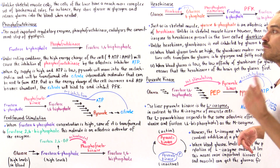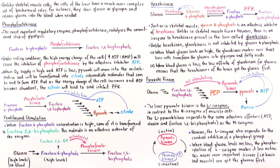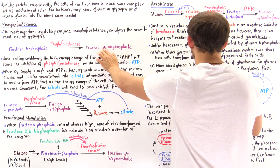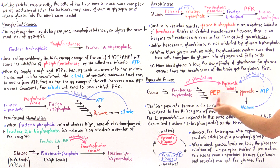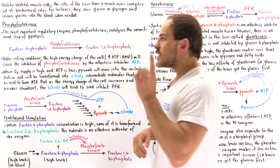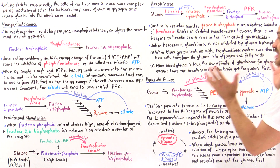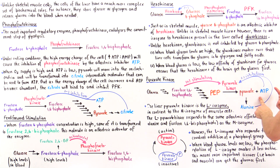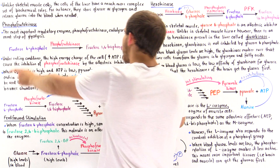Now let's move on to pyruvate kinase. Pyruvate kinase is responsible for catalyzing the final step of glycolysis — the transformation of phosphoenolpyruvate into pyruvate and ATP. Glucose is eventually transformed into fructose-1,6-bisphosphate, then into phosphoenolpyruvate, and pyruvate kinase converts this into pyruvate and ATP. If we have high concentrations of ATP, the ATP creates a negative feedback loop that binds onto pyruvate kinase and inhibits its activity, in the same way that ATP inhibits phosphofructokinase.